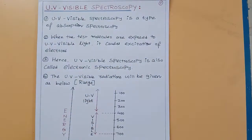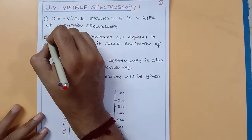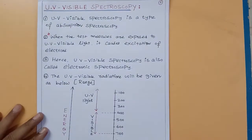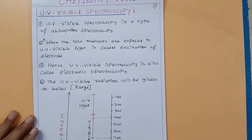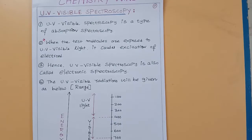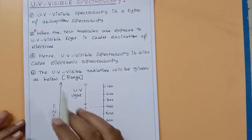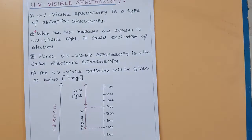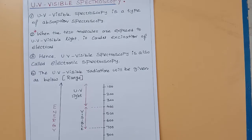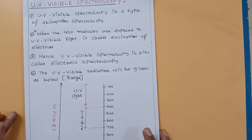When test molecules are exposed to UV-visible light, it causes excitation of electrons. The electrons present in the organic molecule are excited from the ground state to the excited state. Therefore, UV-visible spectroscopy is also called electronic spectroscopy, because the electrons in the test organic molecules are promoted from ground state to excited state upon exposure to UV-visible light.